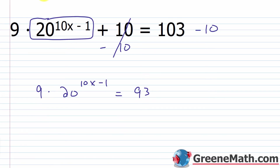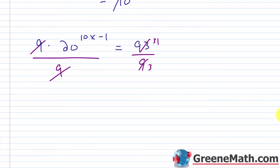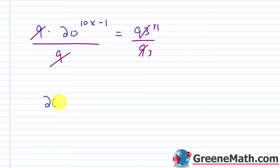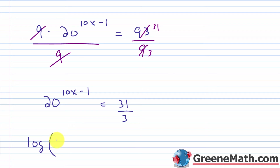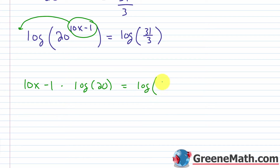The next thing I want to do is divide both sides of the equation by 9. This cancels with this. 93 divided by 9 — well, 93 is not divisible by 9, but it is divisible by 3 — so this is 31 over 3. So now I have 20 raised to the power of 10x minus 1 is equal to 31 thirds. Now I take the log of both sides: log of 20 raised to the power of 10x minus 1 is equal to log of 31 thirds. That allows me to bring the exponent down, so I'll have 10x minus 1 multiplied by log of 20 is equal to log of 31 thirds.